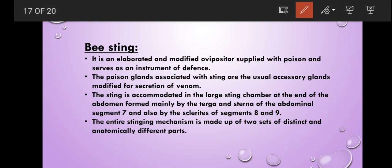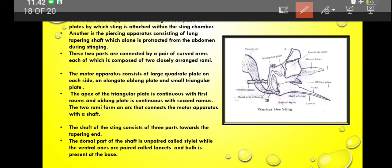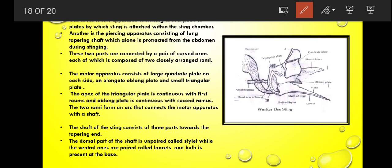Bee sting: it is a modified ovipositor supplied with poison and it serves as an instrument of defense in workers. The poison glands associated with the sting are usually accessory glands modified for the secretion of venom. The sting is accommodated in the large sting chamber at the end of the abdomen. The entire sting mechanism is made up of two sets of distinct and anatomically different parts: one is motor apparatus and another one is piercing apparatus. Motor apparatus consist of few pairs of plates and piercing apparatus consist of long tapering shaft. These two parts are connected by rami.